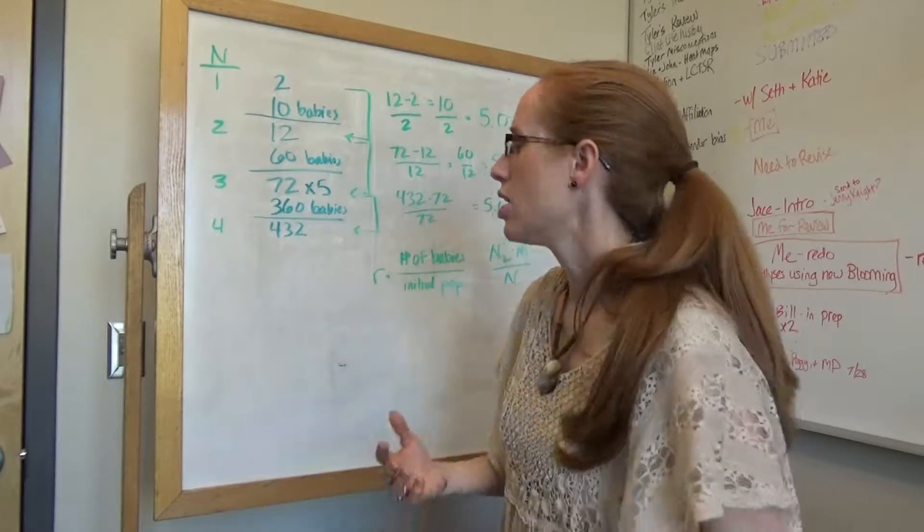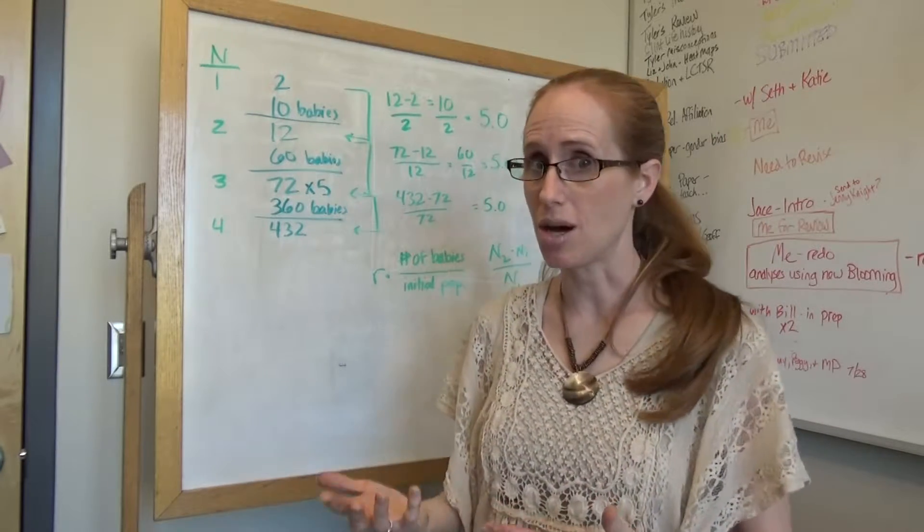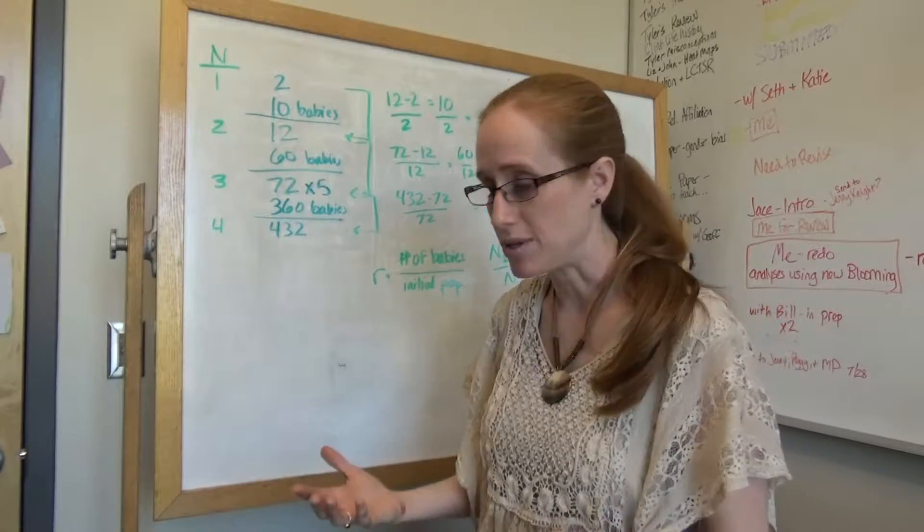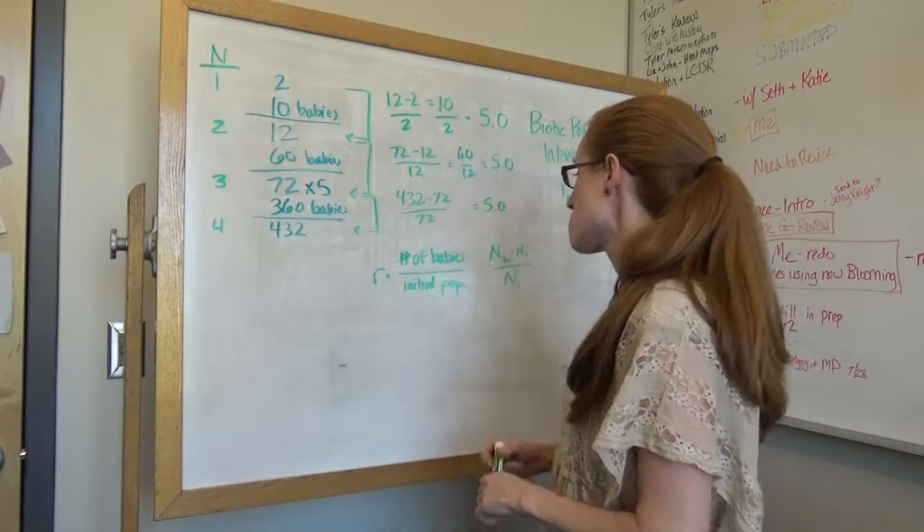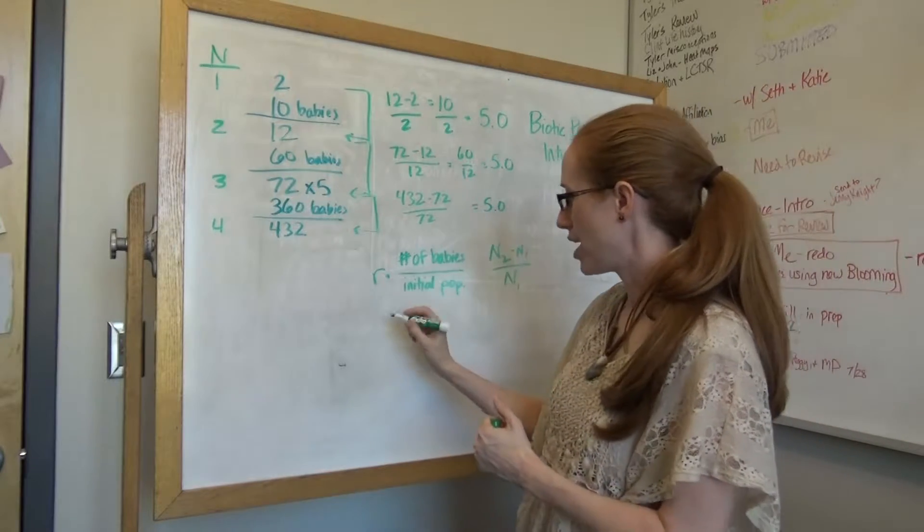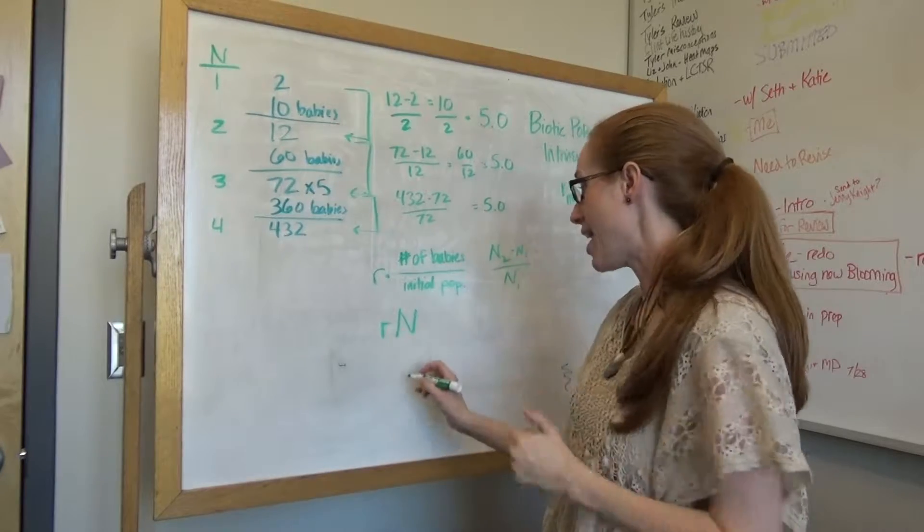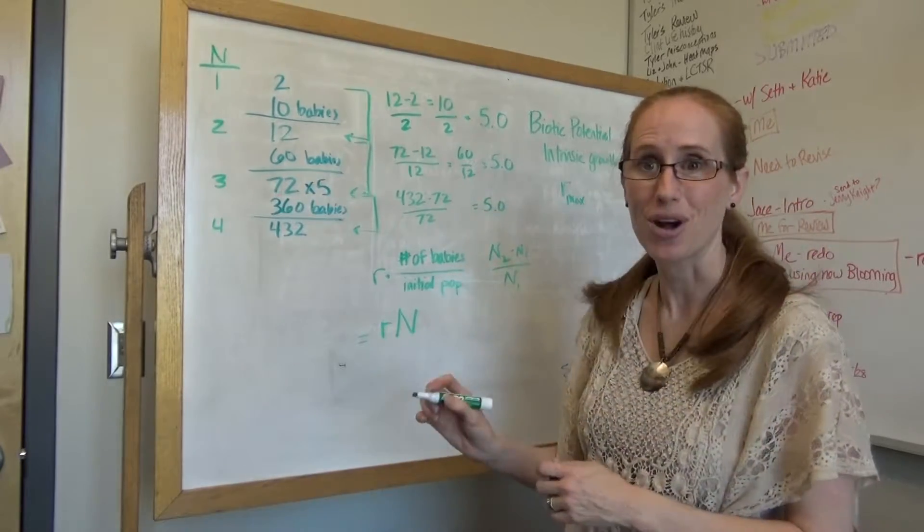But number 10 has them think about how did you know how many babies when you were doing the expected numbers? How did you know how many babies to add with each generation? Well, what did they do? They took the R, number of babies, and they multiplied it by their N. Okay, and that gives you number of babies.